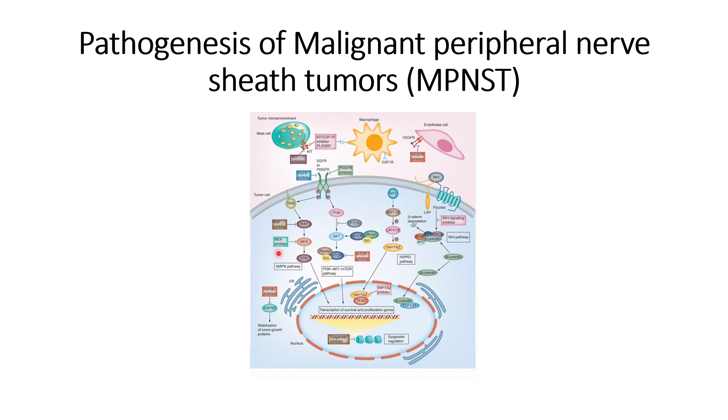Another approach is targeting individual signaling pathways. A MEK inhibitor will inhibit the growth of tumor cells and restrict them from spreading across the cells.